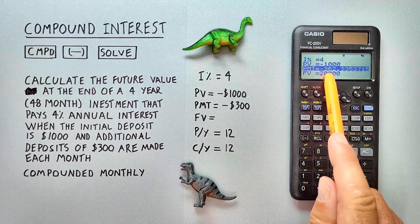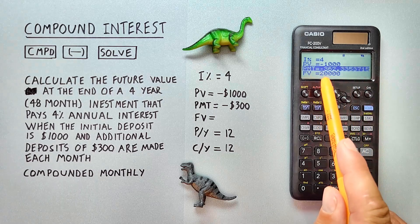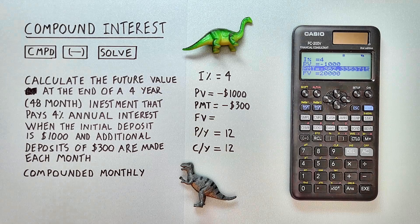And it solves that for us. If we want to get $20,000, we need a monthly payment of $362.33.